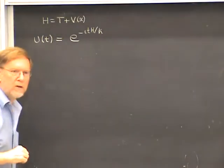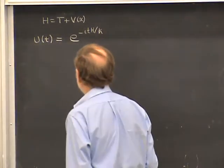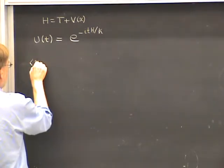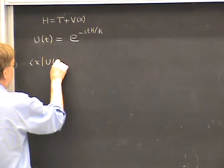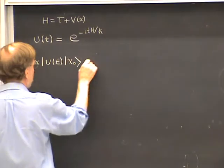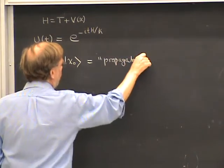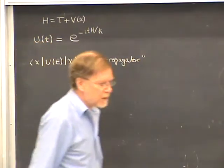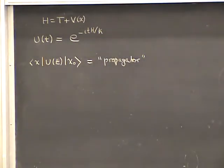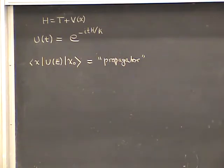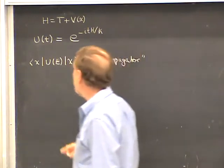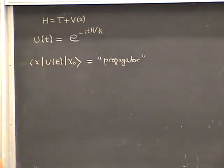I'll put this in quotes and call this the propagator. There are very slight differences from what you'll find in the literature as the exact definition of the propagator, but I'm trying to make the discussion simple, so for us this will do. Later on, when we talk about Green's functions, I'll be more detailed about it. This is essentially the X-space matrix elements of the time evolution operator.